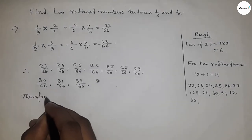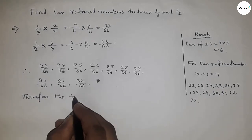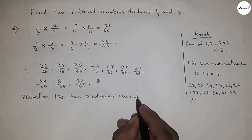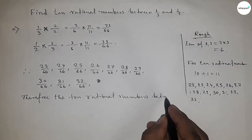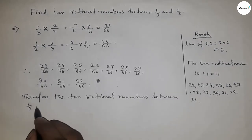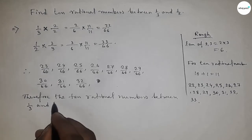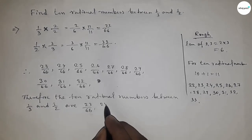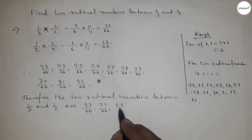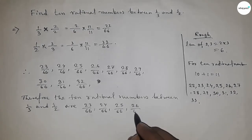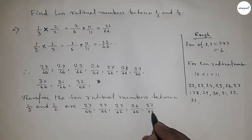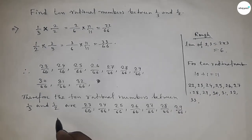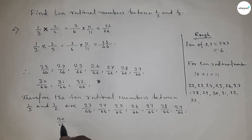Therefore, the 10 rational numbers between 1/3 and 1/2 are from 23/66 to 32/66. These are the 10 rational numbers between 1/3 and 1/2.